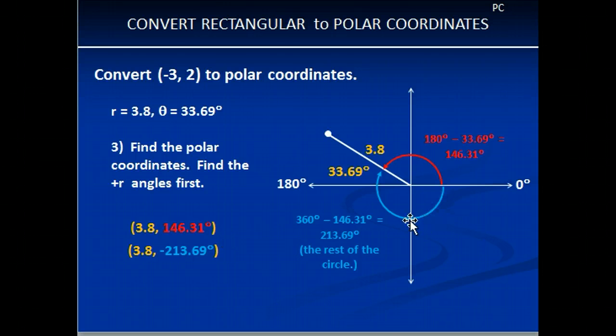The other half, there are two ways that you can find this. It's just going to be the rest of the circle, so you could say 360 minus 146.31, and you will get 213.69 degrees. Don't forget, this is a negative angle. It's the negative half of the circle, and we're going down or clockwise.